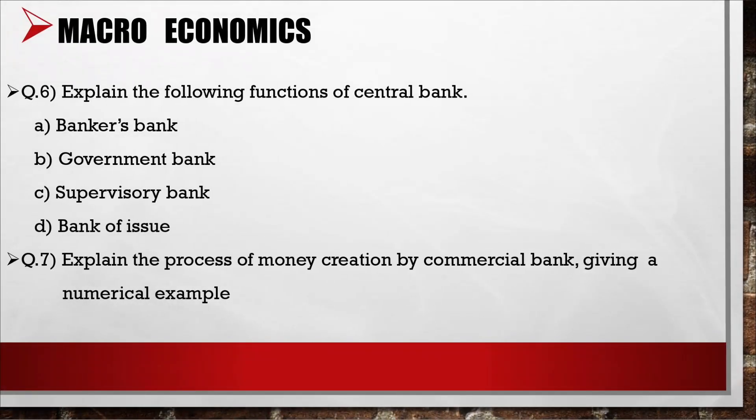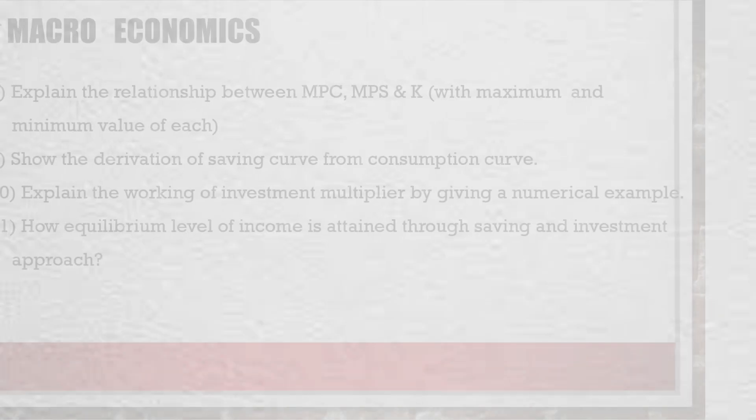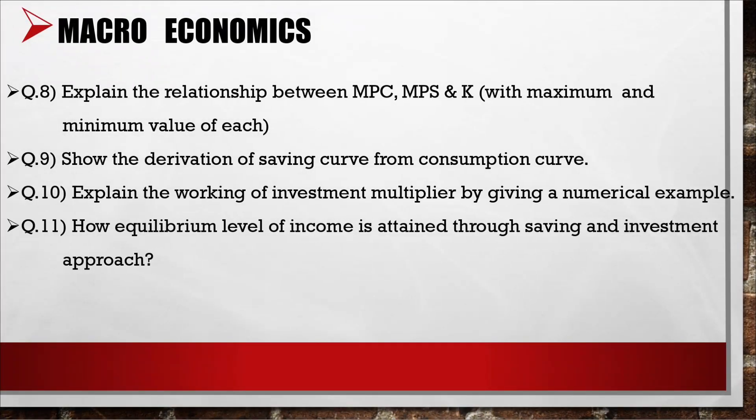6. Explain the following functions of the central bank: banker's bank, government bank, supervisory bank, and bank of issue. 7. Explain the process of money creation by commercial banks, giving a numerical example. 8. Explain the relationship between MPC, MPS, and K, with the maximum and minimum value of each. 9. Show the derivation of the saving curve from the consumption curve. 10. Explain the working of the investment multiplier by giving a numerical example.